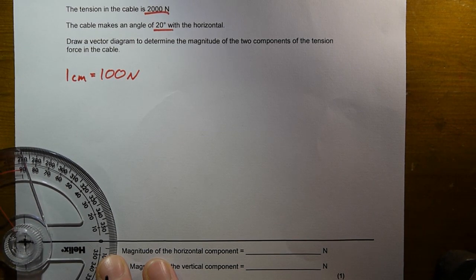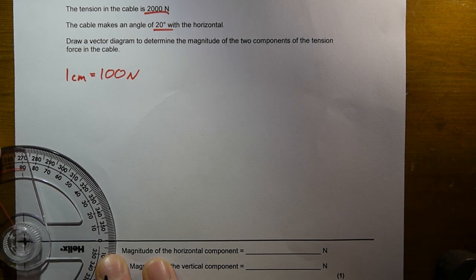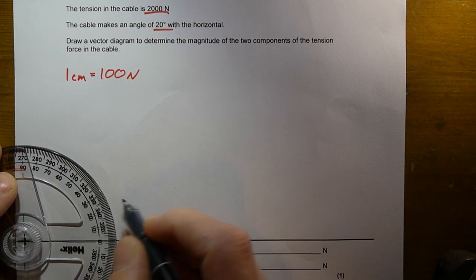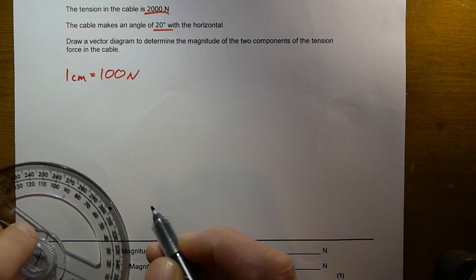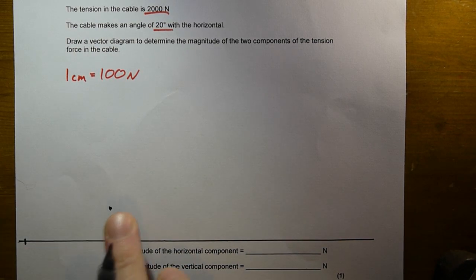The next thing, get my angle measurer, line that up with my cross and my line, and carefully mark on my angle of 20 degrees, and just put a dot there. So I can now draw a line from this point, through that point, and that will be at 20 degrees to the horizontal line.